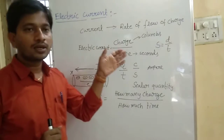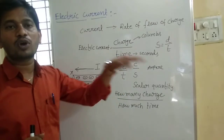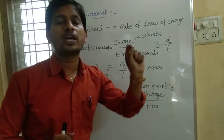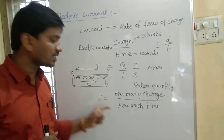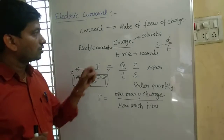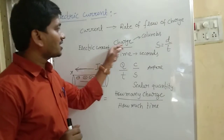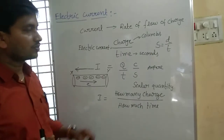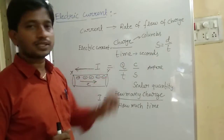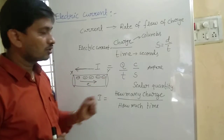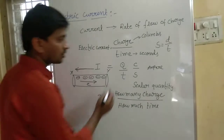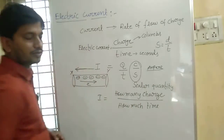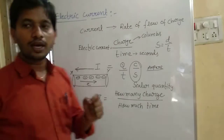How many electrons are passing through the conductor per unit time gives us current. Electric current is nothing but charge upon time. The SI unit of charge is Coulombs and the SI unit of time is seconds — that is, Coulombs per second — which we call Ampere. The SI unit of current is Ampere.